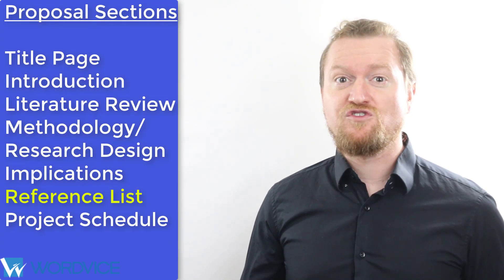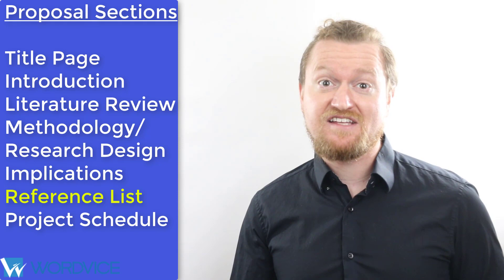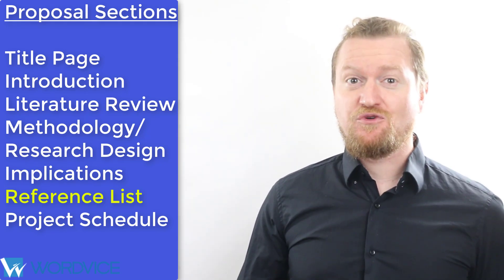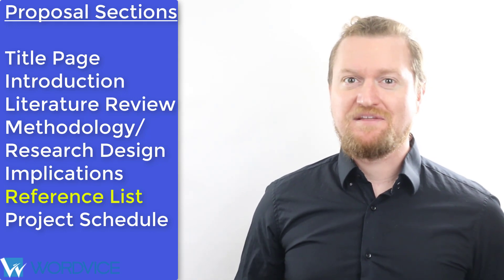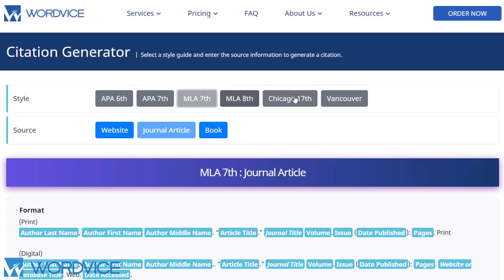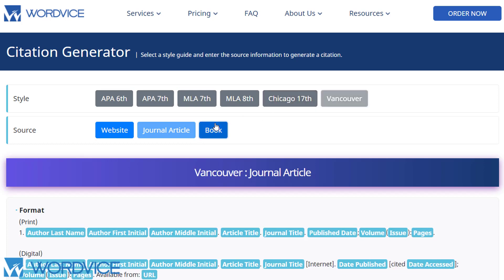Your research proposal must include citations in the text as well as a reference for every source you have used or plan to use in the paper. Keeping track of your sources right from the start will help you organize them better. To create and manage your sources more easily, use Wordvice's free citation generator, which allows you to create references in APA, MLA, Chicago, or Vancouver style.